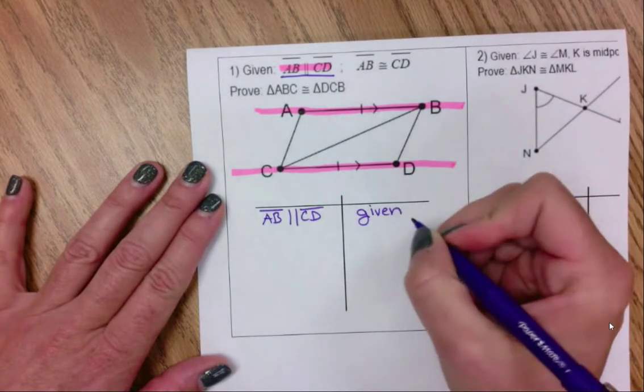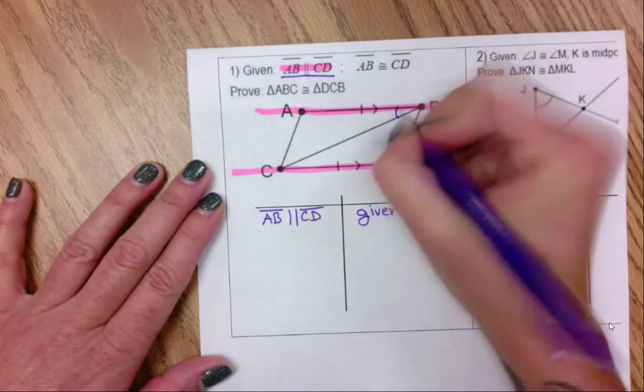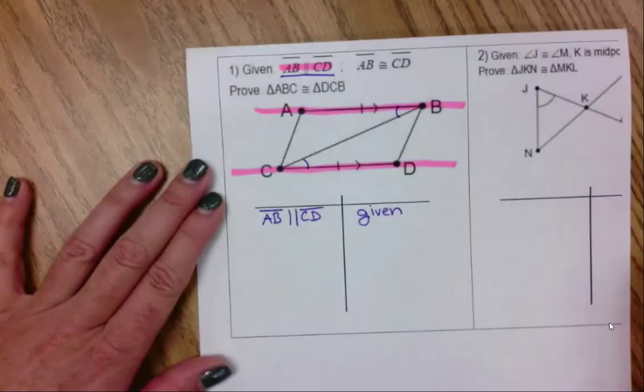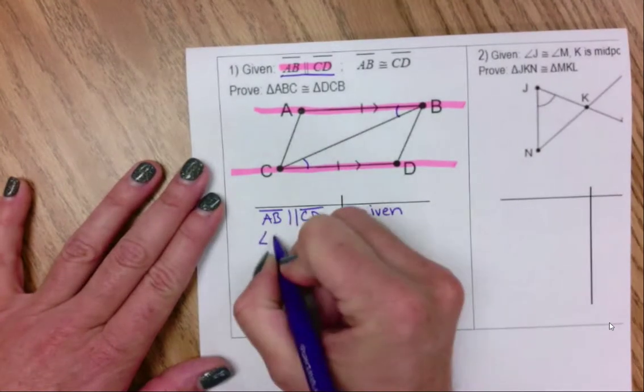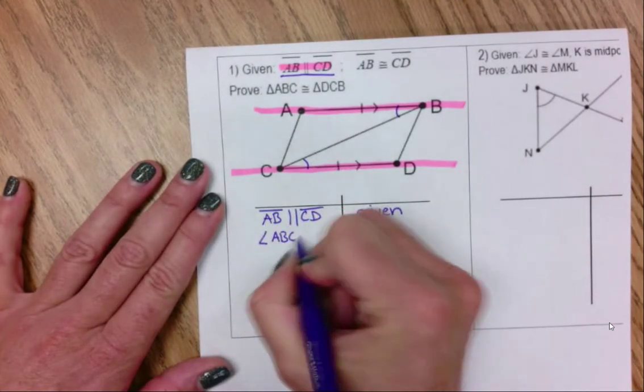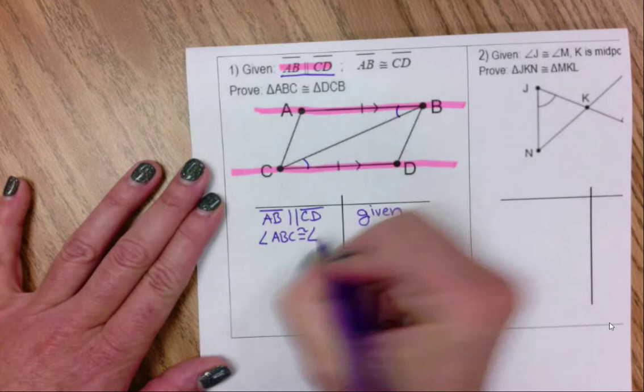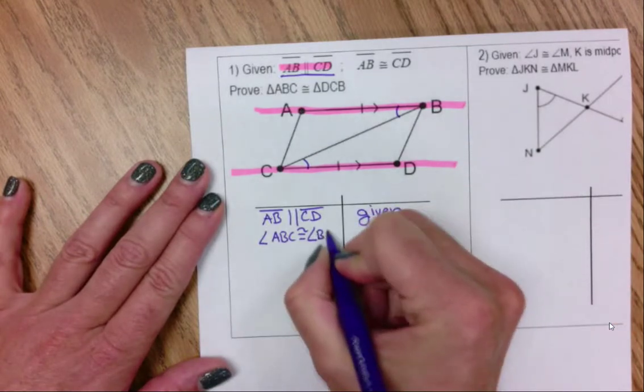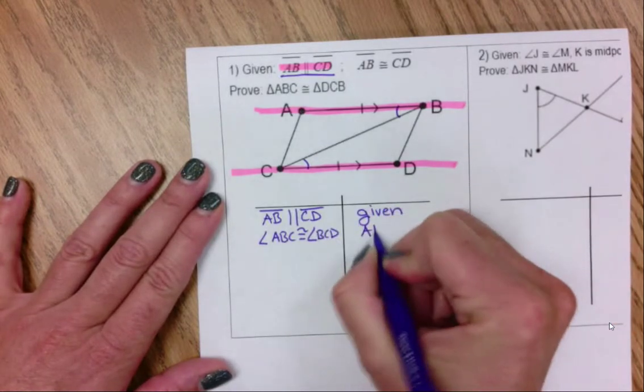And because we have parallel lines, we also have alternate interior angles. So I'm going to say the angle ABC is congruent to angle BCD. Alternate interior angles.